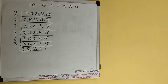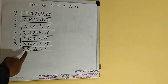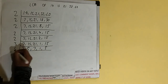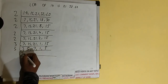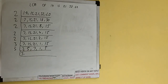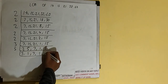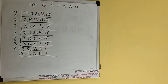None of the numbers is divisible by 3 anymore, so we check with the next lowest prime number, which is 5. The second and the last numbers are divisible by 5. The first number, 7, is not divisible. The second number becomes 1, the third number remains the same, both middle numbers remain the same, and the last number becomes 1.